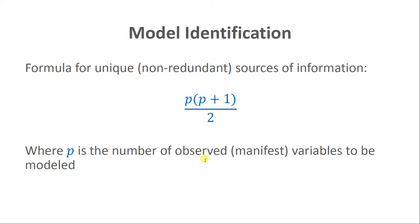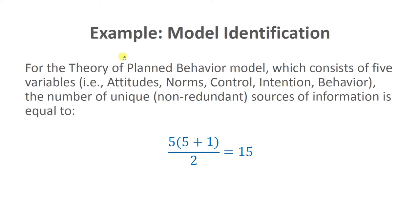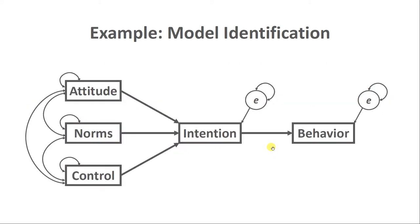In our proposed path model we have five observed variables: attitudes, norms, control, intention, and behavior. So P equals 5. Plugging that into the formula — 5 times 6 divided by 2 — we get 15. So we have 15 non-redundant or unique sources of information with which we can estimate the model. That's the first part of model identification: how many unique sources of information do we have?